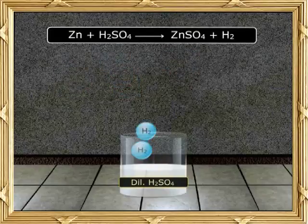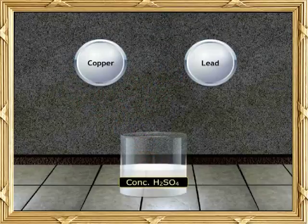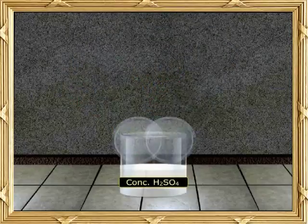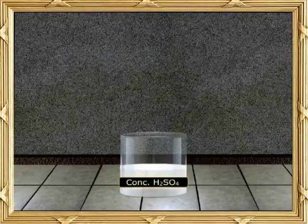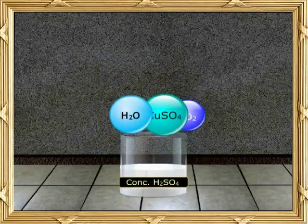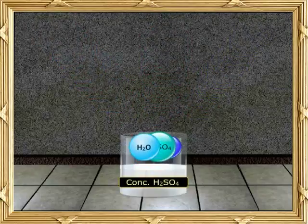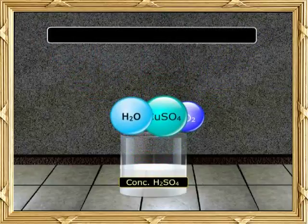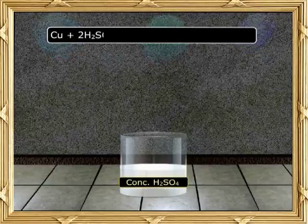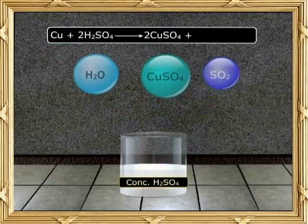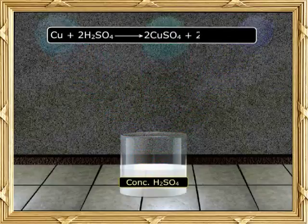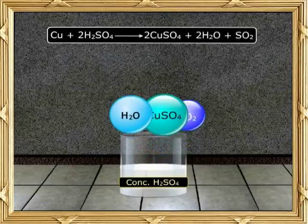Copper, however, does not give hydrogen. Copper and Lead react with concentrated sulfuric acid to give sulfur dioxide, the corresponding metallic sulfates and water. Cu + 2H2SO4 → CuSO4 + 2H2O + SO2.